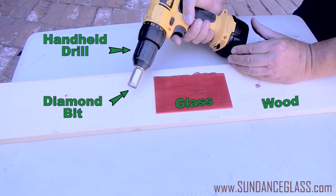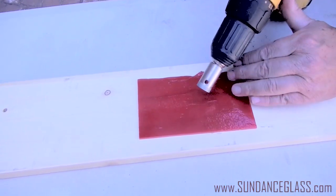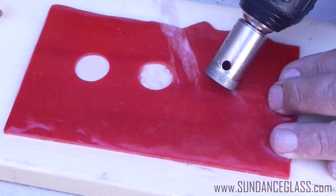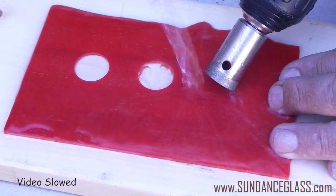To protect your tabletop, place the sheet of glass on top of a piece of wood. Drill bits work most efficiently if water is used to lubricate and remove debris during the drilling process.